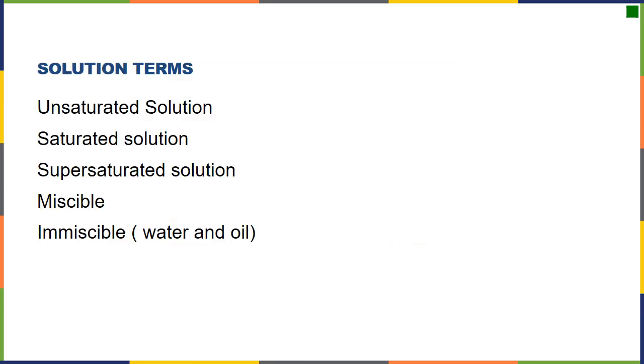We need to talk about some terms with our solutions. We can have saturated, unsaturated, supersaturated, miscible, and immiscible. We know miscible, this is with two liquids. If two liquids dissolve in each other, they're miscible. If we have solutions, we have three options, unsaturated, saturated, and supersaturated.